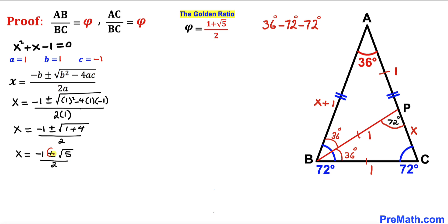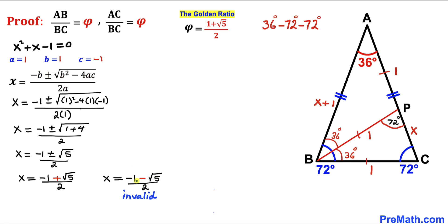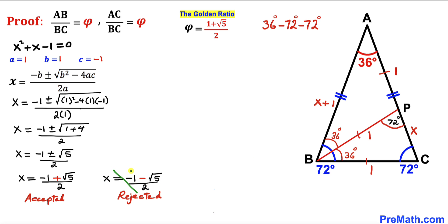Splitting the plus and minus signs gives us two values of x. The first is x equals negative 1 plus square root of 5, divided by 2. The second is x equals negative 1 minus square root of 5, divided by 2. The second value is invalid since it gives a negative result, and since x represents a side length, that is not possible. So we reject the negative value and accept x equals negative 1 plus square root of 5, divided by 2.